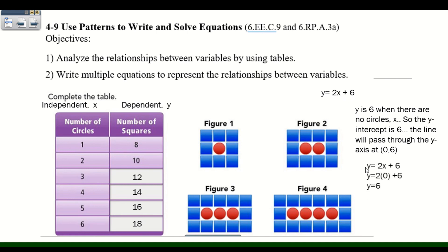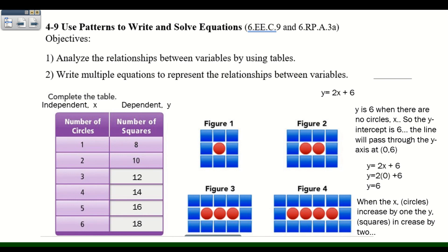So our equation is Y equals two times X plus six, where Y is the Y-coordinate, two is the constant rate of change — we add two squares — and six is the Y-intercept. If we put zero in for X, we see Y equals six. When X increases by one circle, Y increases by two squares — that's where we get our constant rate of change of two times X.